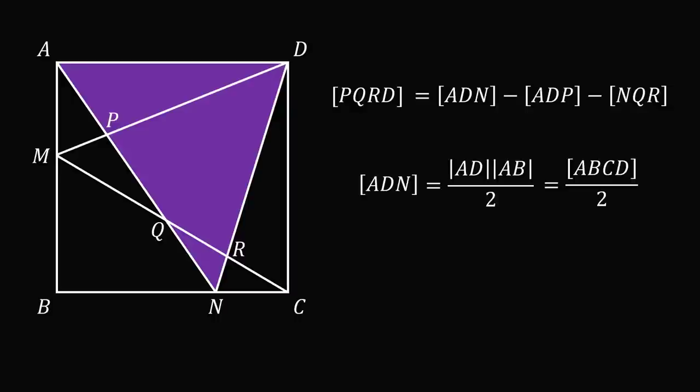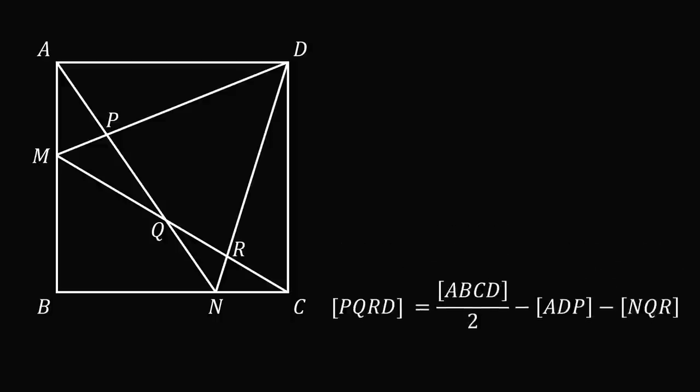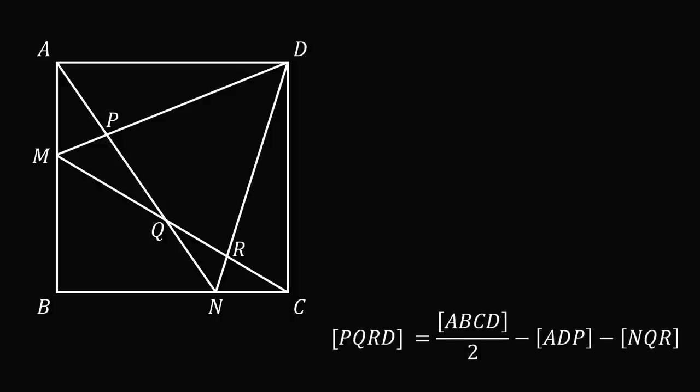We can substitute this for the area of ADN. We now have an equation for the area of the region PQRD. Let's now put this equation to the side and focus on the areas of the region shaded in green.